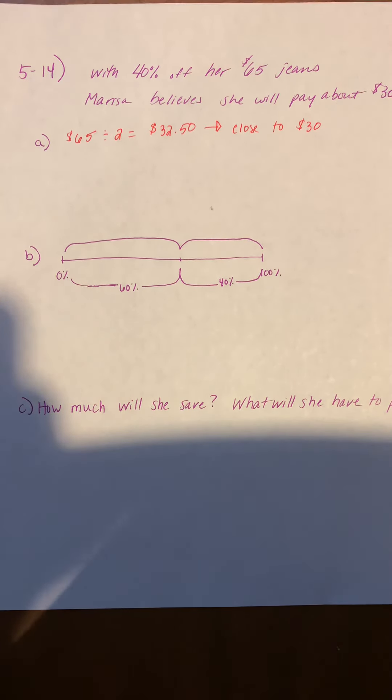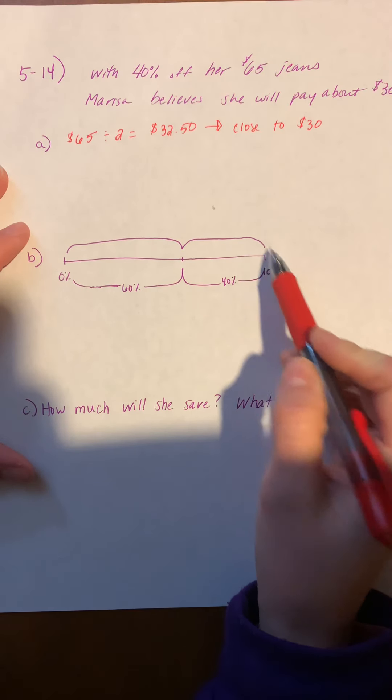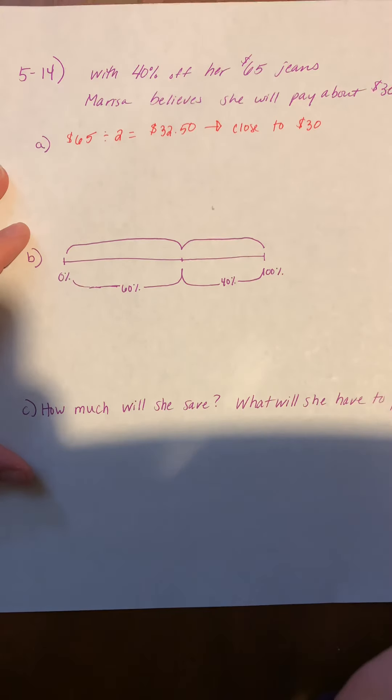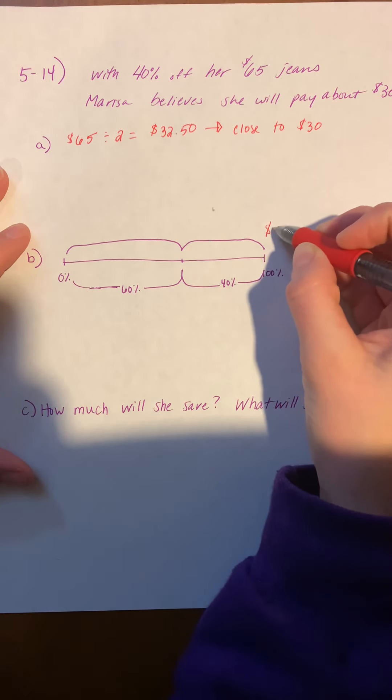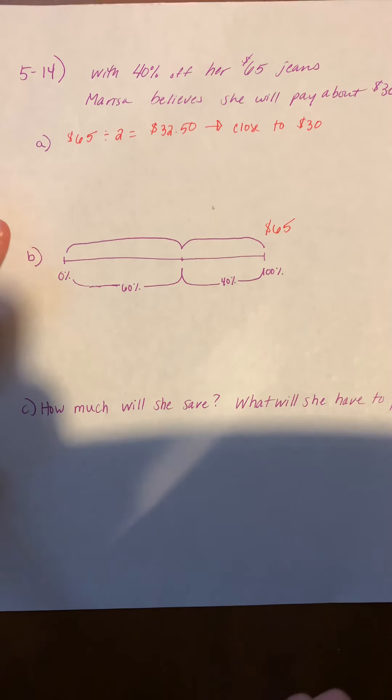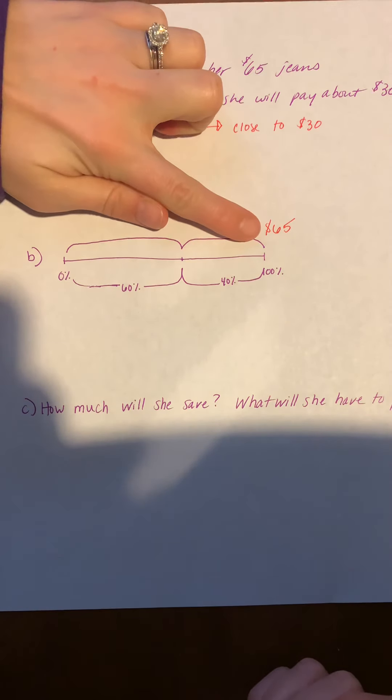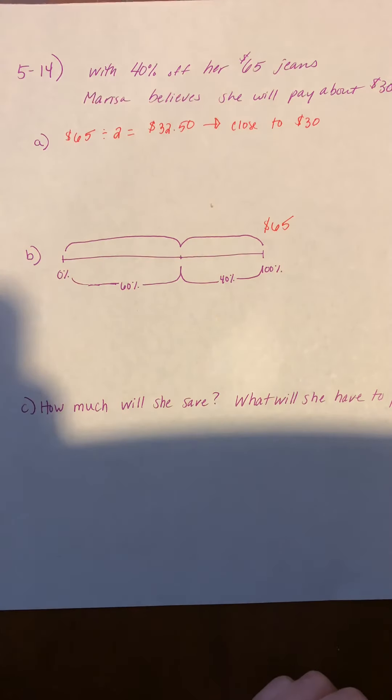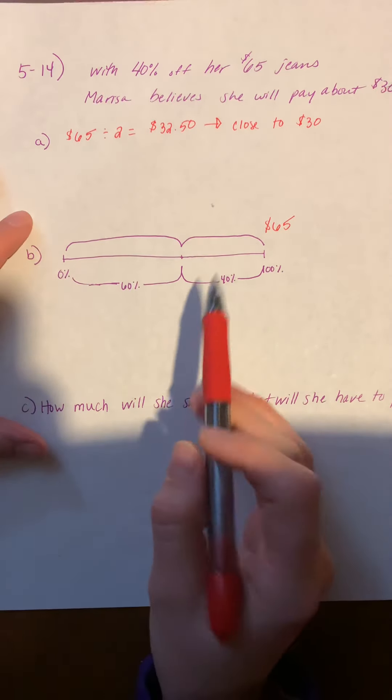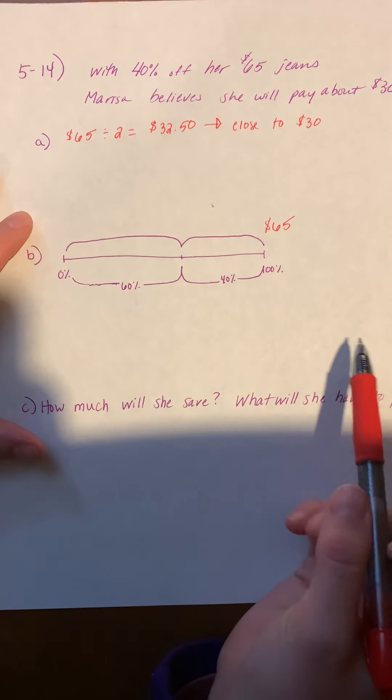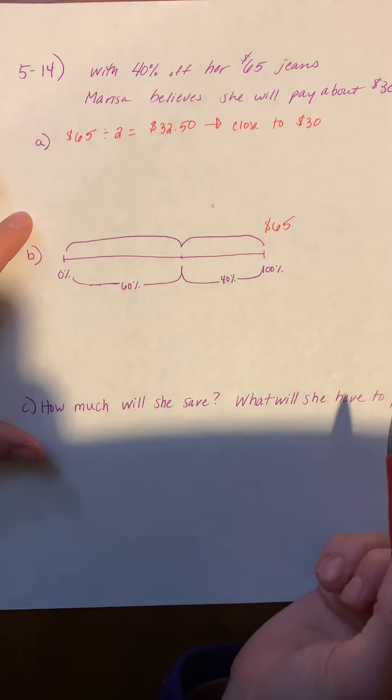So when we used this yesterday, we always know that my 100% value is going to go on top of where my 100% is. So we know that her jeans regularly cost $65. So I'm going to put that $65 over here on top of the 100. Now I have this broken down. So we have what my discount is and then what the remaining price would be. So I want to first find out what that discount is going to be.